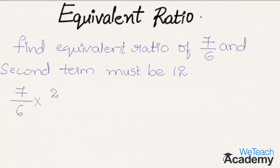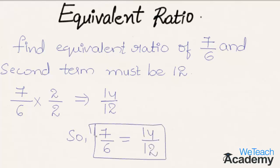So here 7 by 6, and to get second term as 12, we have to multiply the numerator and the denominator by 2. We get the result as 14 by 12. So here the equivalent ratio of 7 by 6 is equal to 14 by 12.